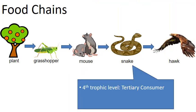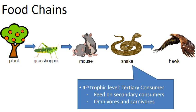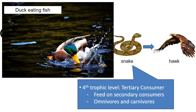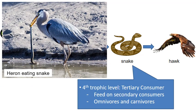At the fourth trophic level — the third consumer — we have the tertiary consumer, feeding upon the secondary consumers beneath it. As we get higher on the food chain, we see the larger carnivores and omnivores. Examples include a snake eating a mouse, a duck eating a fish, and a heron eating a snake — showing that snakes themselves can be fed upon by even larger animals.